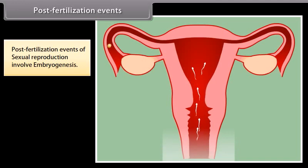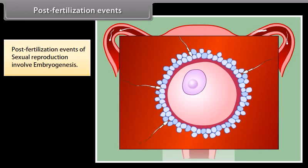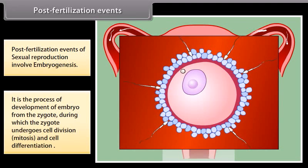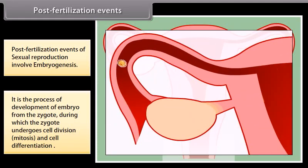Post-fertilization events of sexual reproduction involve embryogenesis — the process of development of an embryo from the zygote, during which the zygote undergoes cell division, mitosis, and cell differentiation, as shown in the diagram.